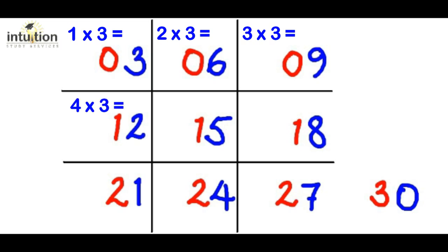Here we've got 4 times 3, which is 12. Here we've got 5 times 3, which is 15. Here we've got 6 times 3, which is 18.